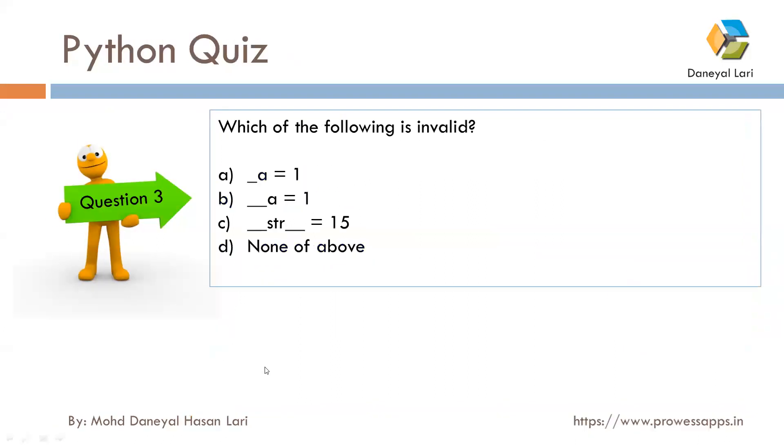Next question was: which of the following is invalid? I have already explained the naming convention you need to follow when you declare any variable. Underscore is permissible in a variable name, so it is not a problem. All options are valid, so the correct answer is D, none of these.